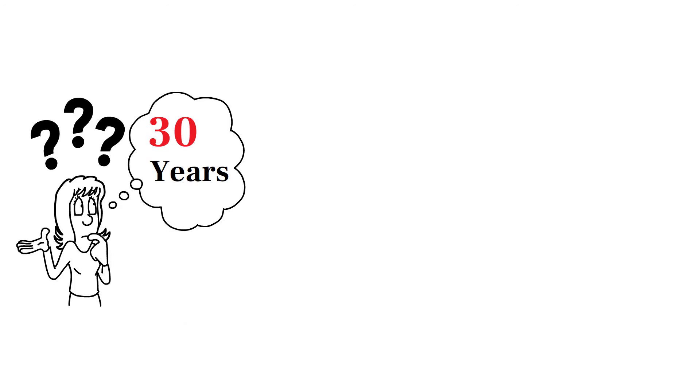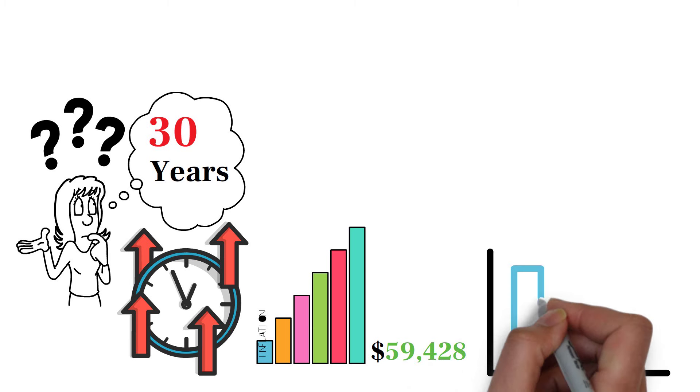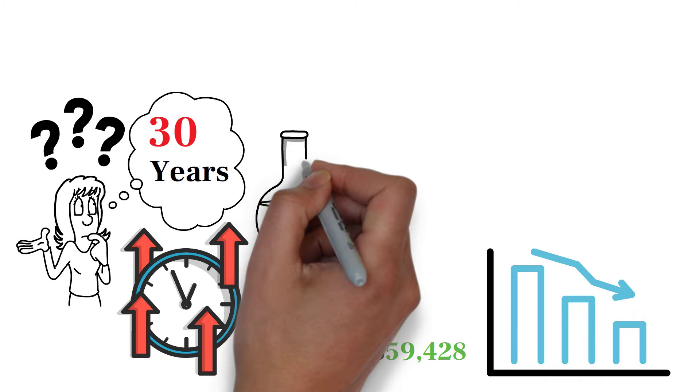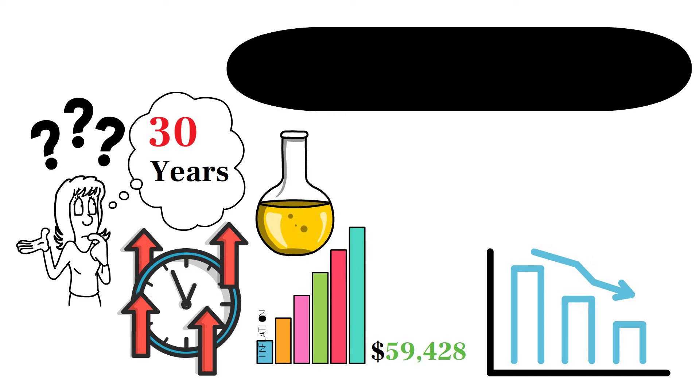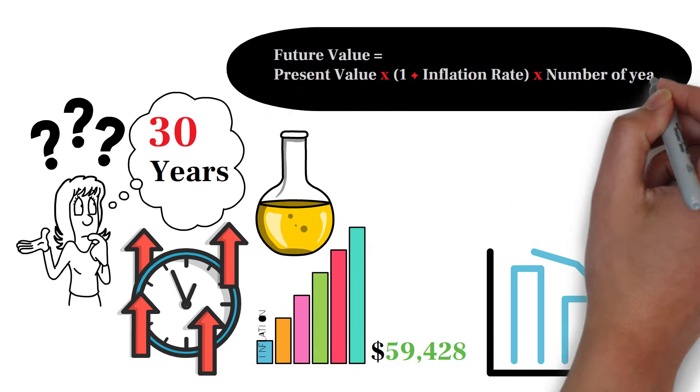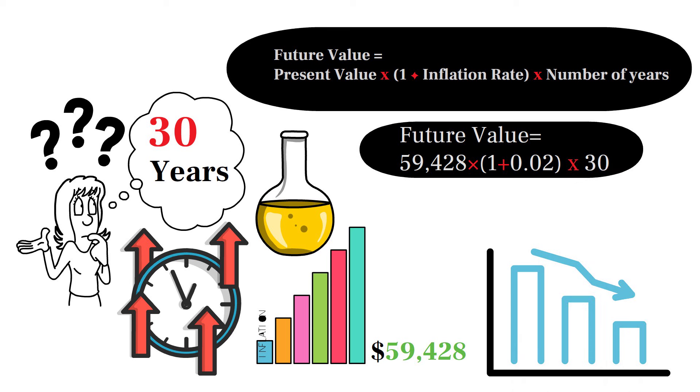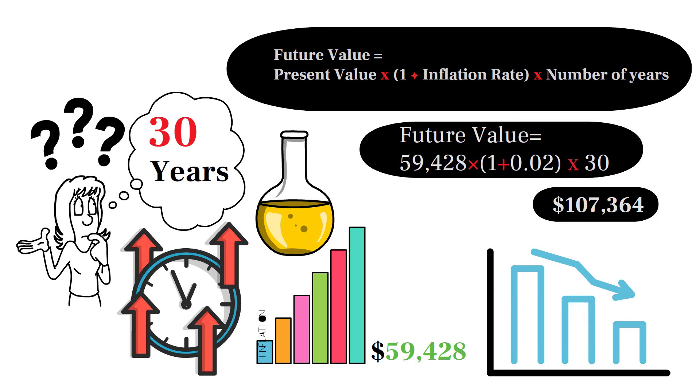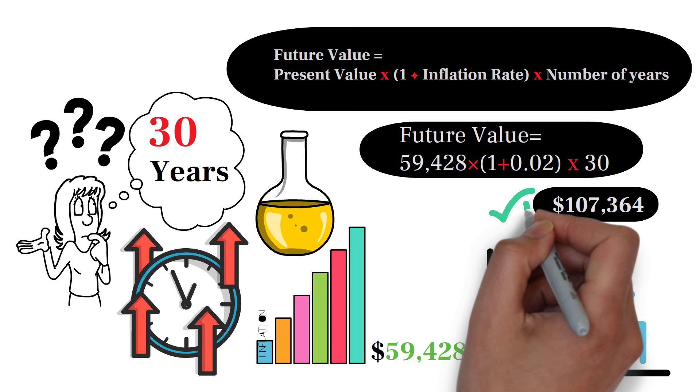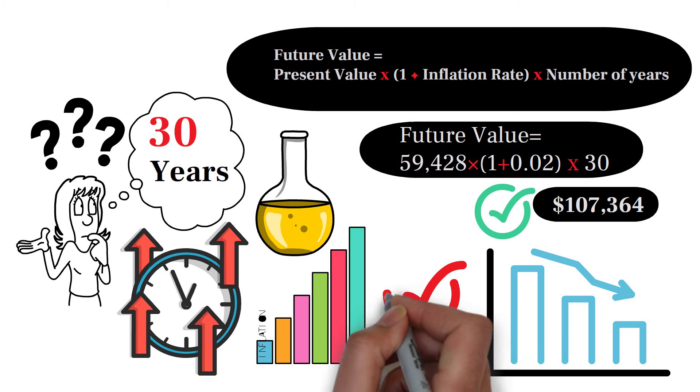To accurately determine how much you'll need in 30 years, we must consider the impact of inflation. Assuming an annual inflation rate of 2%, the future value of today's $59,428 will be higher due to the decreased purchasing power of money over time. Using the formula for future value with inflation, we can calculate: Future value equals present value times (1 plus inflation rate) to the power of number of years. Future value equals 59,428 times (1 plus 0.02) to the power of 30, which is approximately equal to $107,364. This means in 30 years, you would need approximately $107,364 annually to match the purchasing power of $59,428 today.